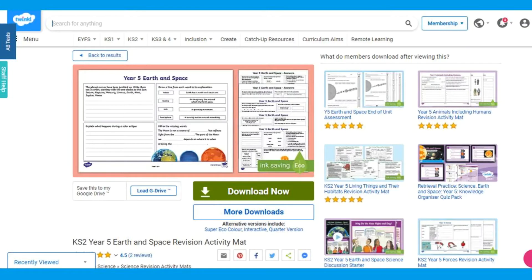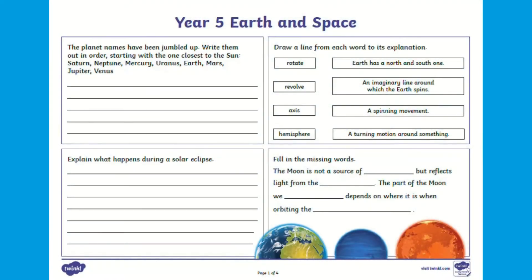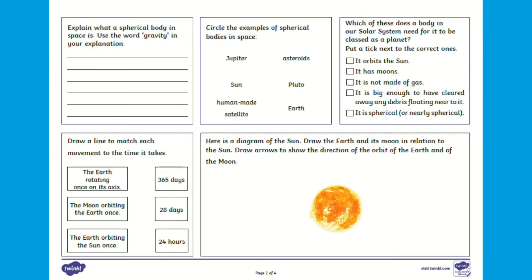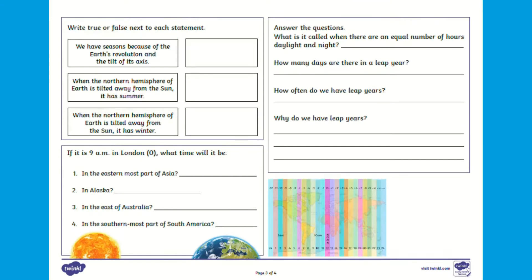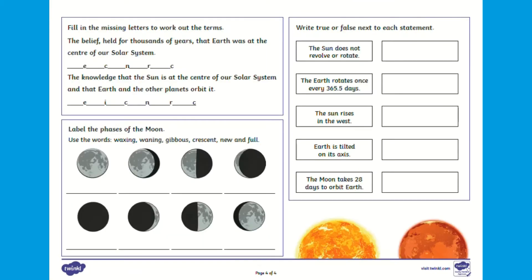Looking at this Year 5 Earth and Space revision map, it contains activities which will help your child to revise their learning of space and Earth. This revision map covers a range of objectives from the Year 5 Earth and Space unit over four pages. They include the movement of the Earth and other planets, and describing the Sun, Earth and Moon as spherical bodies.